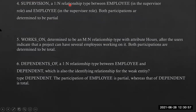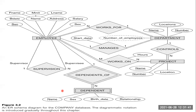Supervision is a one-to-many (1:N) relationship type between the employee in the supervisor role and the employee in the supervised role. Both participations are determined to be partial — not all employees can be supervisors and not all employees are supervised. Just as not all faculties can be principal, some are supervisors and some are supervised.